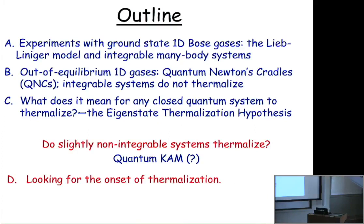I'll start by talking about some of the systems we use — the 1D Bose gases, how we make them, and the like. Then I'll explain out-of-equilibrium gases and talk about quantum Newton's cradles, and show that to a pretty good approximation these integrable systems don't thermalize. I'll have a theoretical side note about whether something might be happening near the integrable point, particularly centered around the eigenstate thermalization hypothesis. And then for the latter third to half of the talk, I'll show how we're looking for the onset of thermalization in this nearly integrable system.